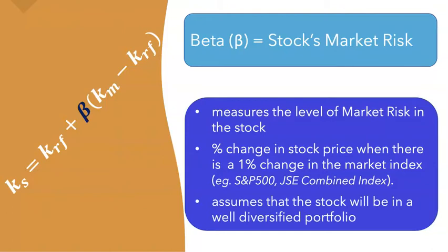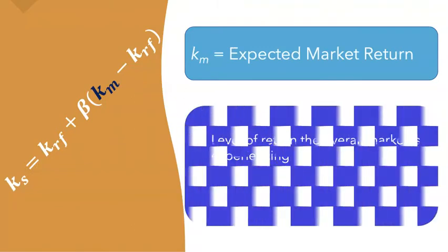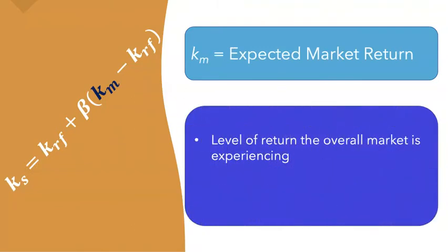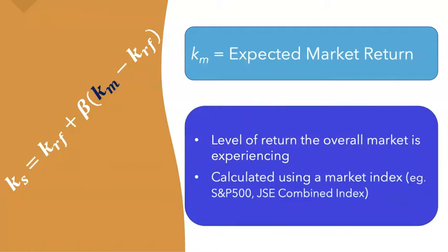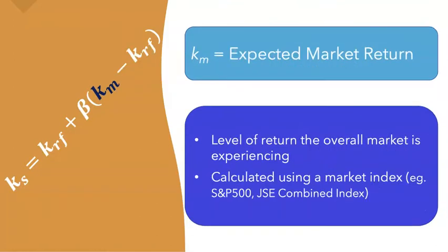Beta assumes that the stock is going to be in a well-diversified portfolio. Next, KM is the expected market return — the overall level of return that people are experiencing in the market. We can calculate it using a market index, such as the S&P 500 or the Jamaica Stock Exchange Combined Index.